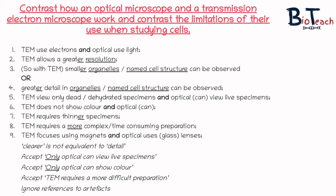Remember that transmission electron microscopes view only dead specimens whereas the optical microscope can view live specimens, and the optical can show specimens in colour but the TEM does not show colour at all. For the TEM you require thinner specimens and because of that it takes more time to prepare your slides. The last point covers how the TEM focuses by using magnets whereas the optical uses glass lenses.